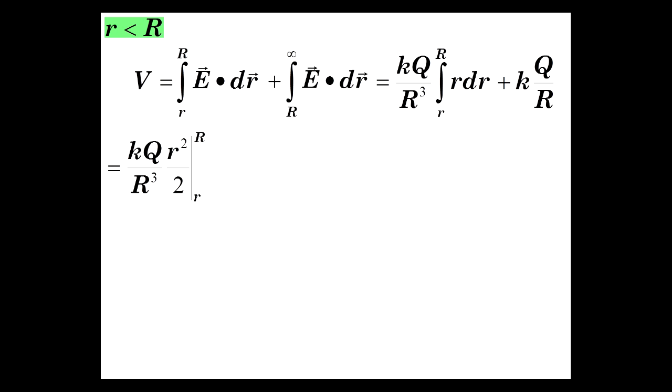So KQ over R cubed, r squared over 2, from little r to R, plus KQ over R. So we can factor out KQ over 2R, it's this whole thing, R squared minus little r squared, plus KQ over R.